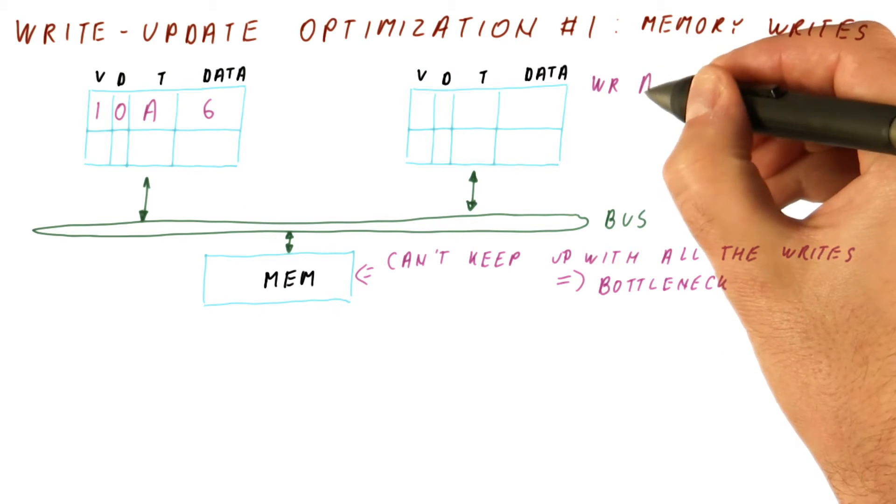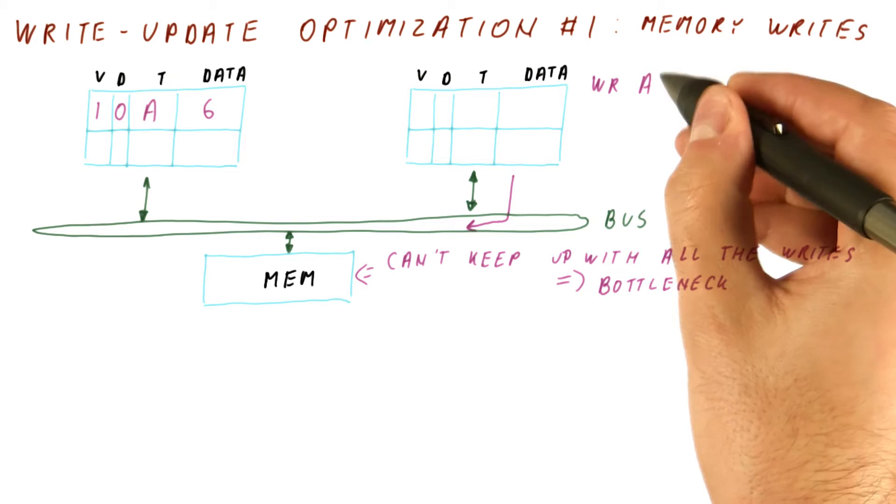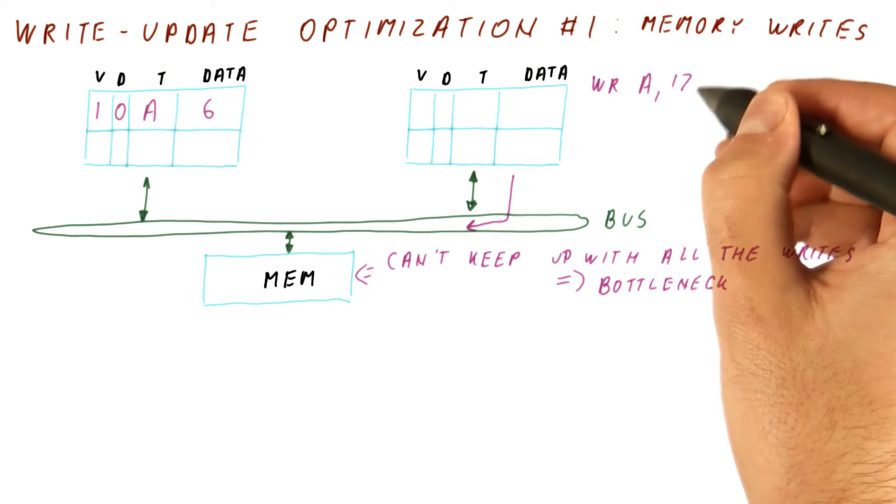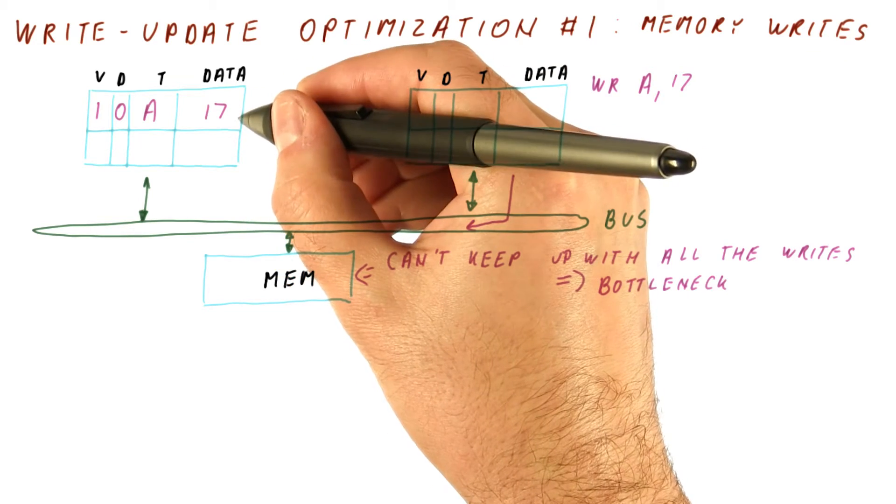Now this cache writes A. At this point it will broadcast the write with the address of A and the value that it writes, let's say 17. So this cache here would update the value.